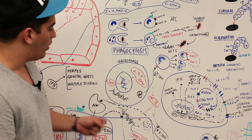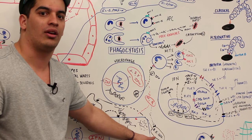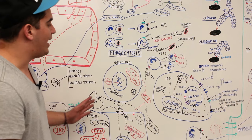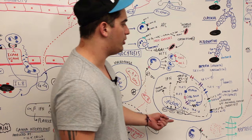Alpha and beta interferons can also cause the activation of natural killer cells who can come in and start killing some of these virus infected cells. So it's a beautiful thing, and that is part of our innate immune system still.